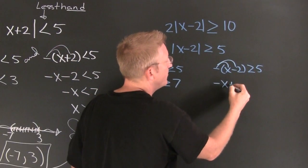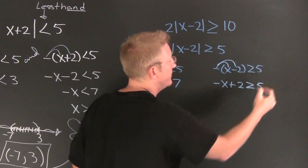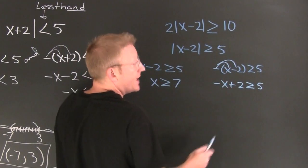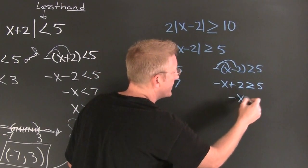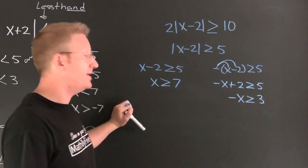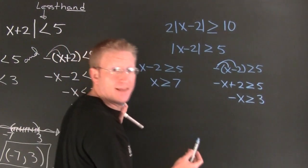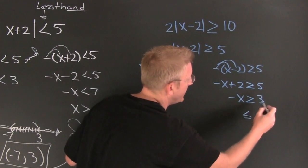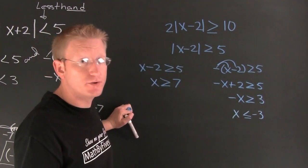Over here, negative x plus 2 is bigger than or equal to 5. I was distributing in the negative on this side so I do not have to change the sign. I'm going to subtract 2 off each side and I have negative x is bigger than or equal to 3. Further isolating x I multiply both sides by negative 1, and whenever you multiply or divide by a negative number you have to switch the sign. There's your negative 3 right there.